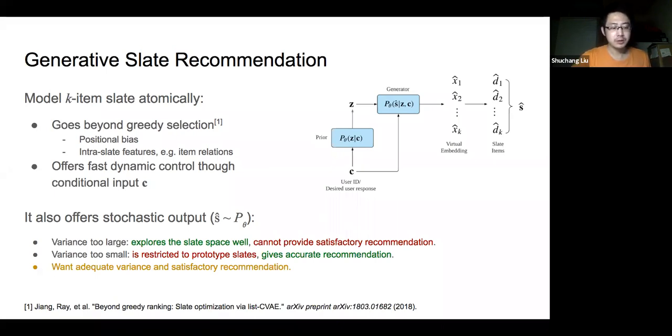However, this generative approach is stochastic during training and inference and this brings an additional challenge. Specifically, increasing the variance would more effectively explore the variety of items that may sacrifice recommendation accuracy. In the end, we would like to learn a model that can find the balance between sufficient variance and good accuracy.